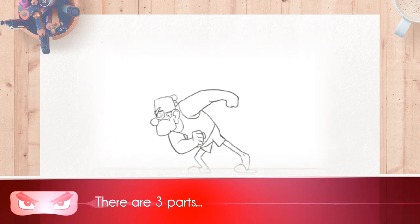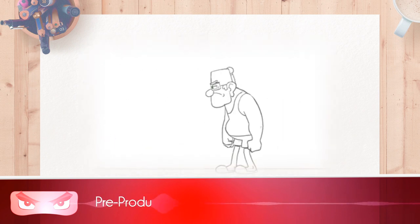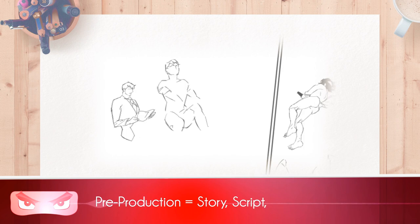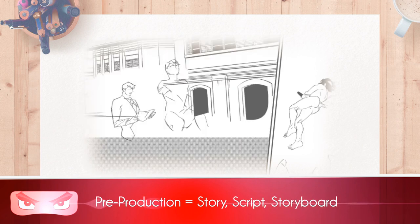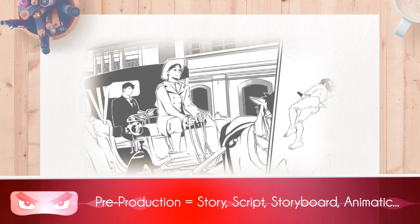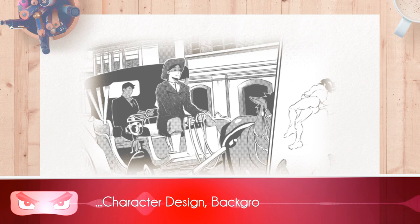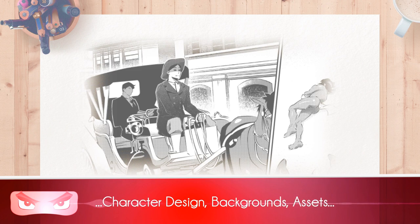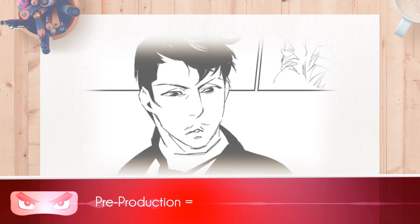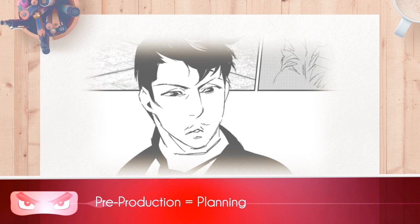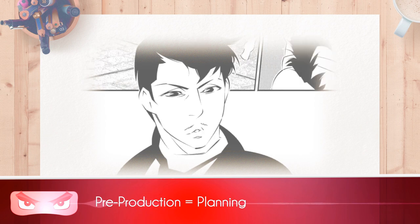The first part is the pre-production, which includes the story, the script, the storyboard, the animatic, the character designs, the backgrounds, and the assets. All of that is pre-production — there's no animation happening in that phase. It's the preparation of the animation.